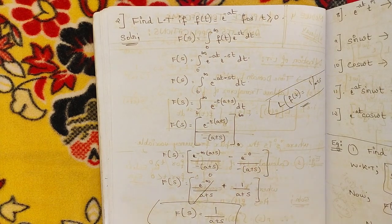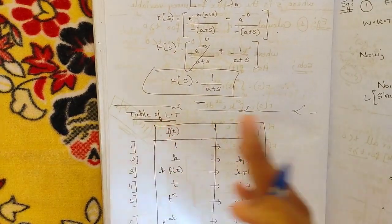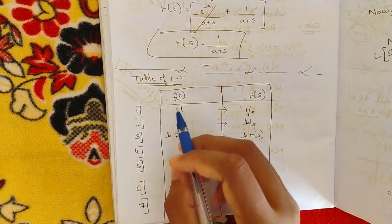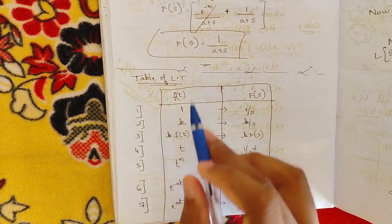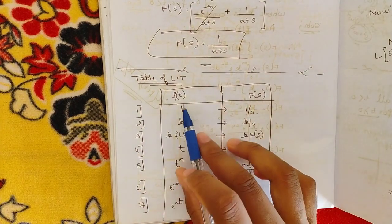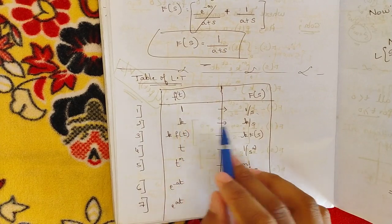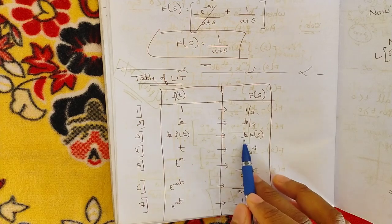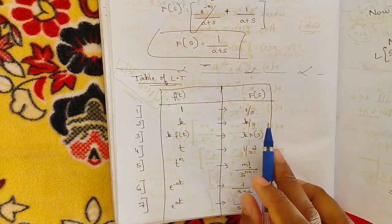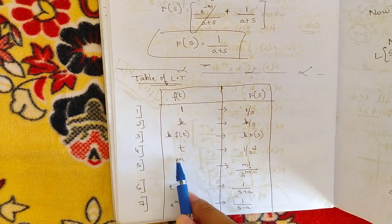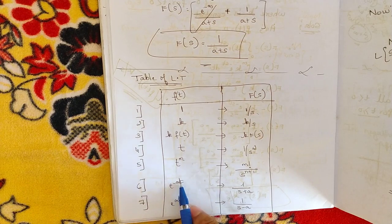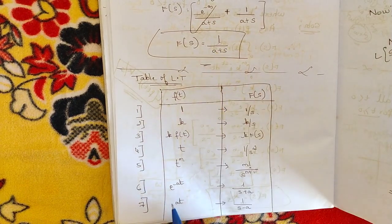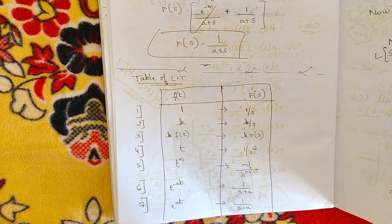Like this we have seen two important worked examples. We also have a standard table of Laplace transforms which you need to remember. When f(t) = 1, F(s) = 1/s. When f(t) = k, F(s) = k/s. When k·f(t), F(s) = k·F(s). When f(t) = t, F(s) = 1/s². When f(t) = t^n, F(s) = n!/s^(n+1). When f(t) = e^(−at), F(s) = 1/(s+a). When f(t) = e^(at), F(s) = 1/(s−a). This table is very important.